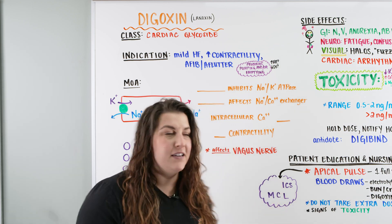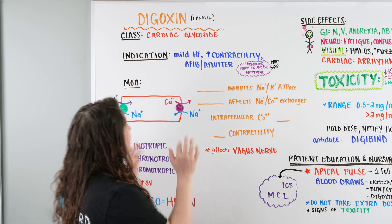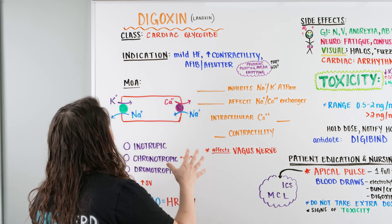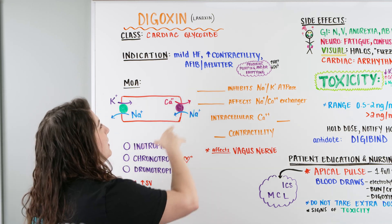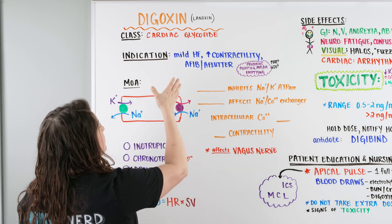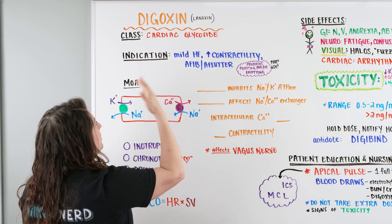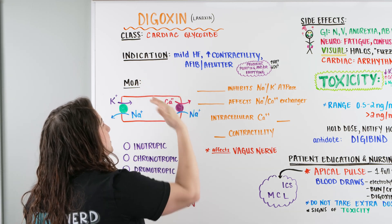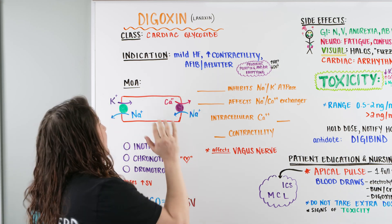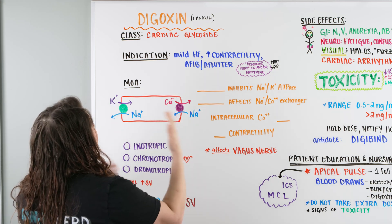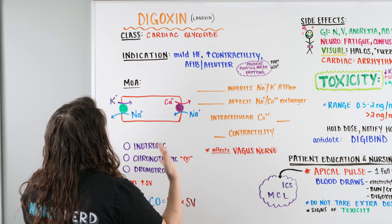Digoxin is one of those big hitters on the NCLEX. Also known as Lenoxin, but usually it's called Digoxin or DIG, and it is in a class of cardiac glycoside.